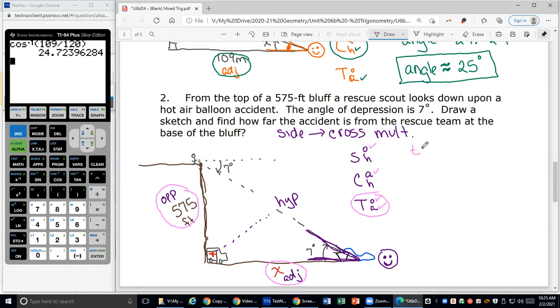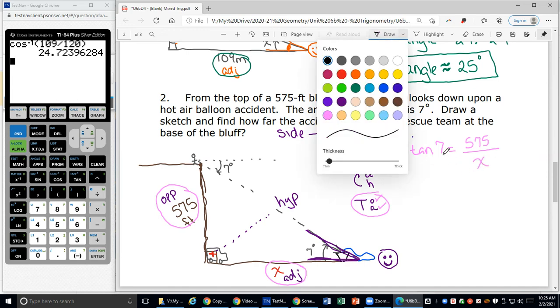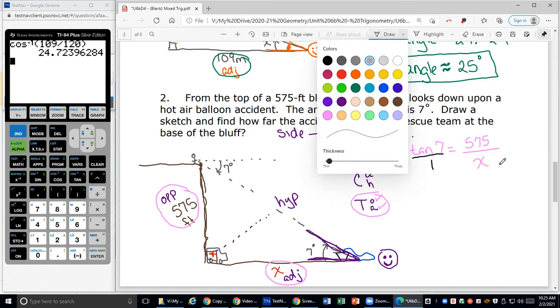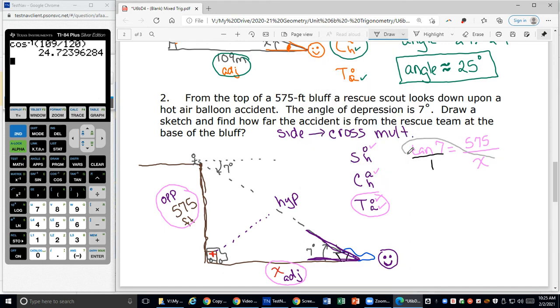So the trig function I'm going to use is tangent. The tangent of the angle 7 degrees is equal to O over A. My O opposite is 575. My A adjacent is X. Then we're going to put the left side over 1 so that we can cross multiply because we're looking for a side. So we know we're going to cross multiply.